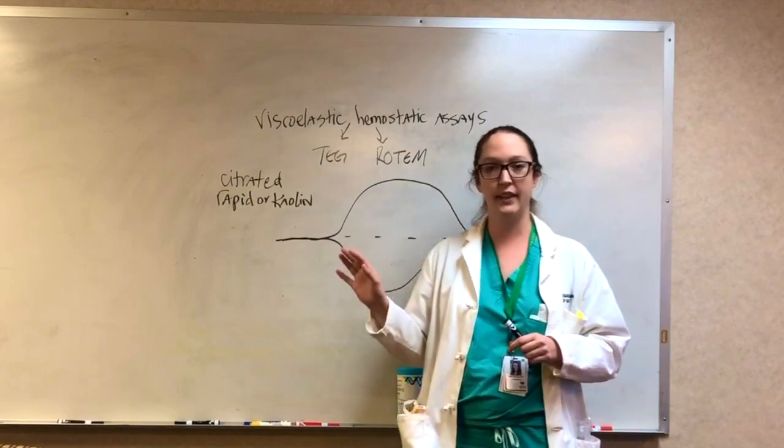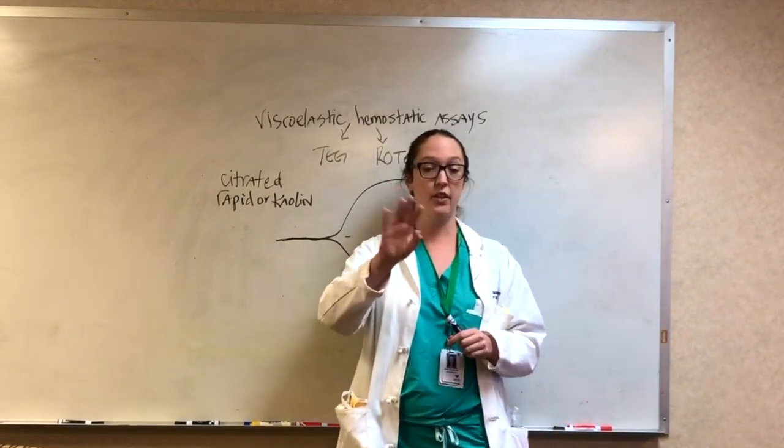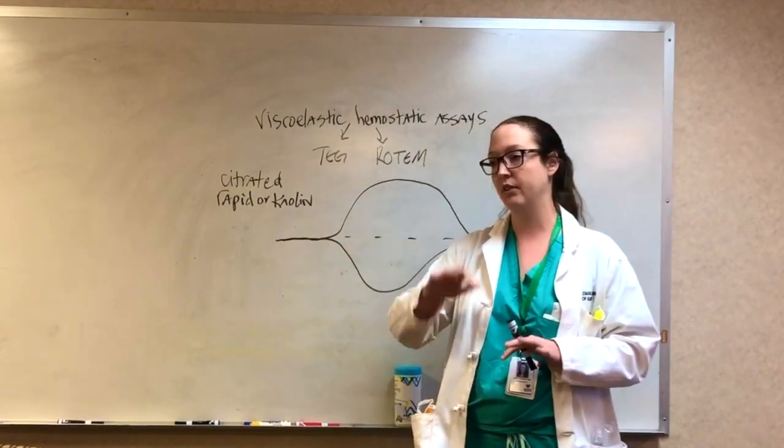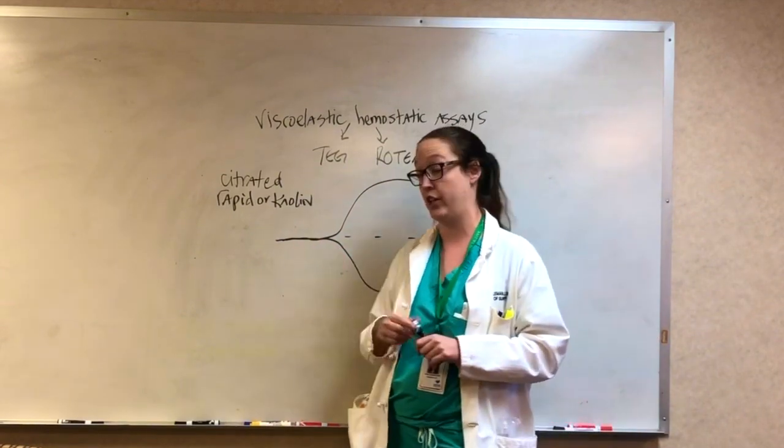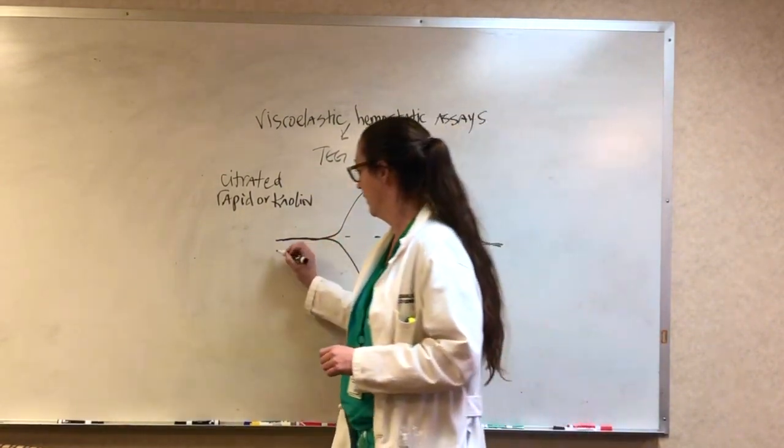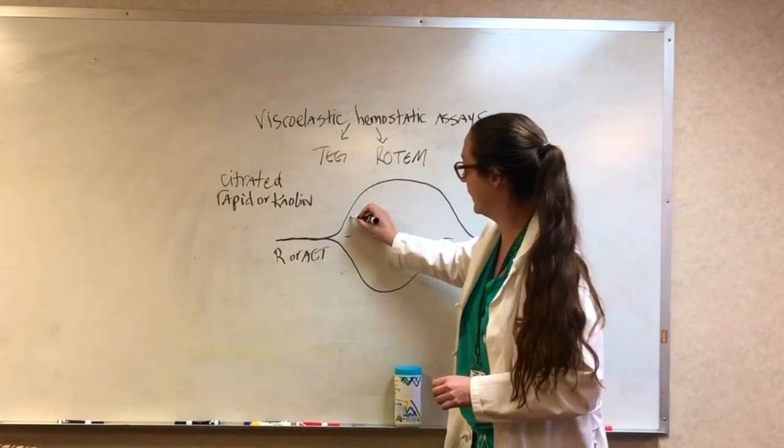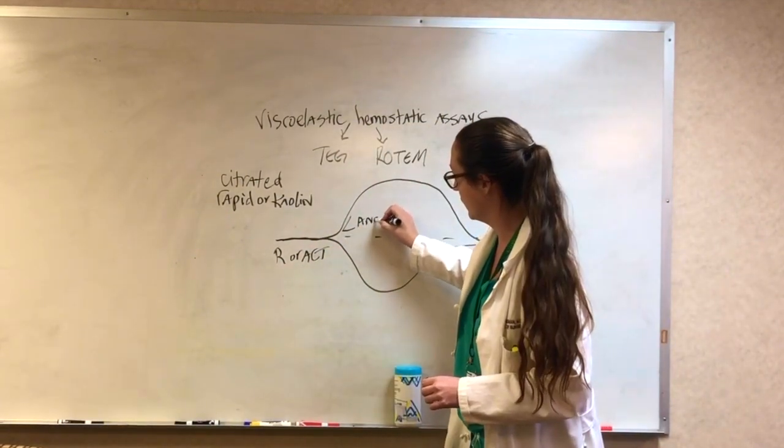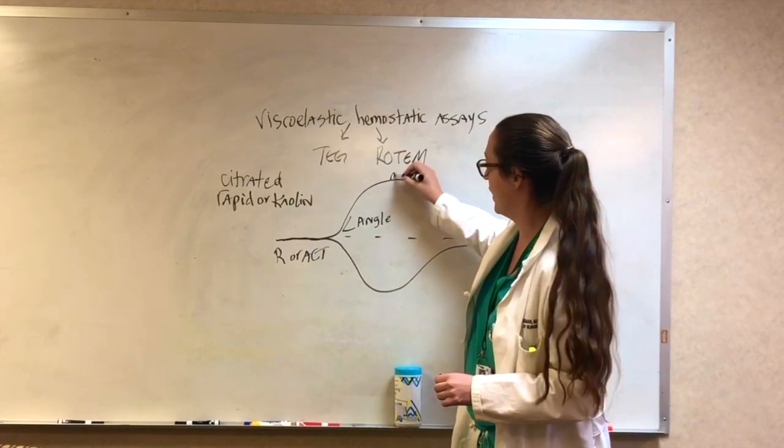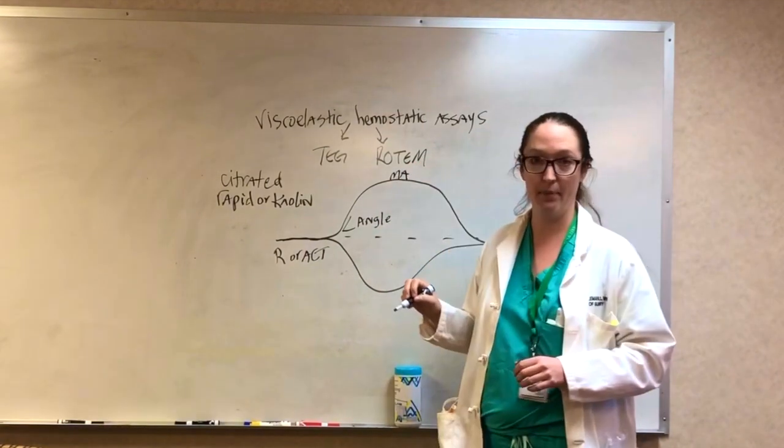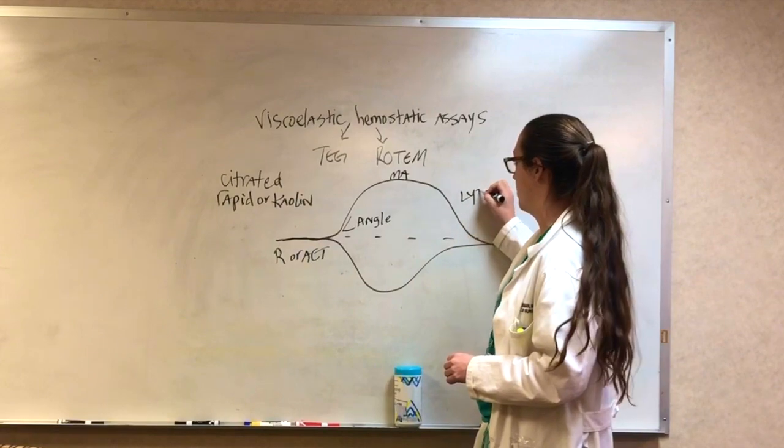When you look at a TEG tracing, there's only four measurements that you need to care about and report to when you call your attending or you call your chief. First is R or ACT. The second is angle. The third is MA or maximum amplitude. And then the last one is LY30.